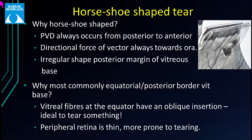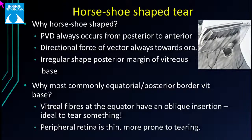Why is a horseshoe-shaped tear horseshoe-shaped? PVD always extends from posterior to anterior, so the directional force vector is always towards the ora. Horseshoe tears are most commonly equatorial because vitreous fibers at the equator have an oblique insertion, making it easier to tear at an acute angle rather than pulling vertically. Also, compared to the posterior retina, the peripheral retina keeps getting thinner, making it easier to tear.